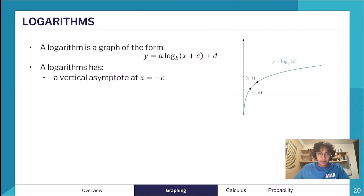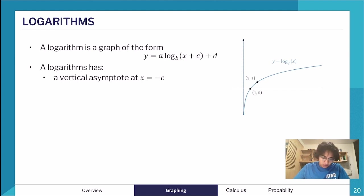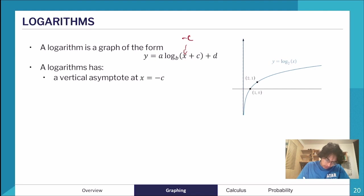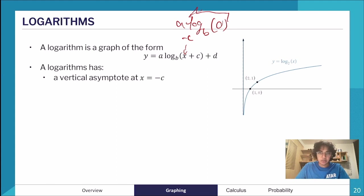A logarithm function has the general form y = log_b(x + c) + d. While the exponential function had a horizontal asymptote at y = d, a logarithm has a vertical asymptote at x = −c. This is because when x = −c the argument of the log becomes 0, and log of 0 is not possible — so the asymptote exists there.